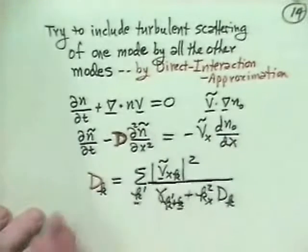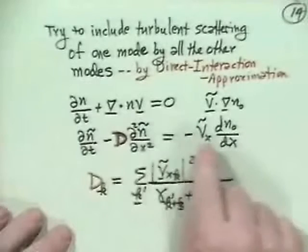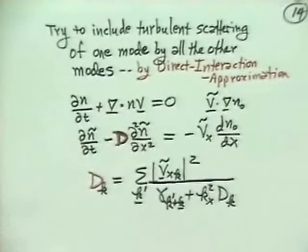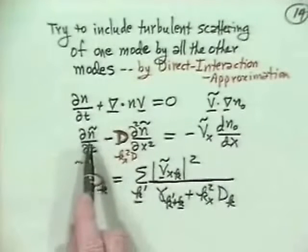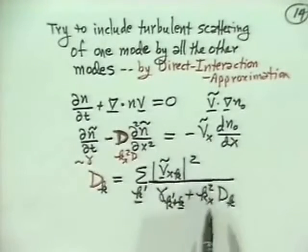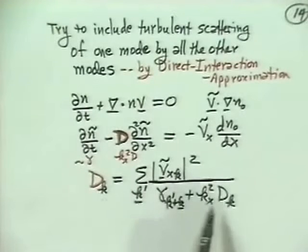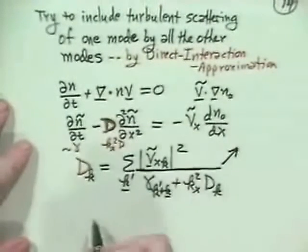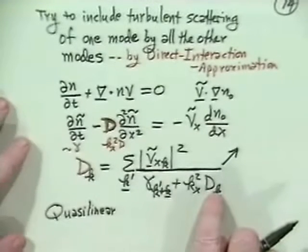And then if you go and calculate that, which is what the essence of the direct interaction approximation is, you can show that the dk, which means the diffusion of the k-th mode, e to the ik dot x particular k, is the sum over all the other modes, of the fluctuations vxk tilde squared divided by sort of the growth rate of the k prime plus k mode plus kx squared times the diffusion coefficient itself. The reason is that in some sense d by dt represents a growth rate, and so there's a decorrelation of the density fluctuations with the flow fluctuations by gamma. But what happens, so this is sort of like, if you look at it this way, this is sort of like a gamma, and this is sort of like kx squared d.